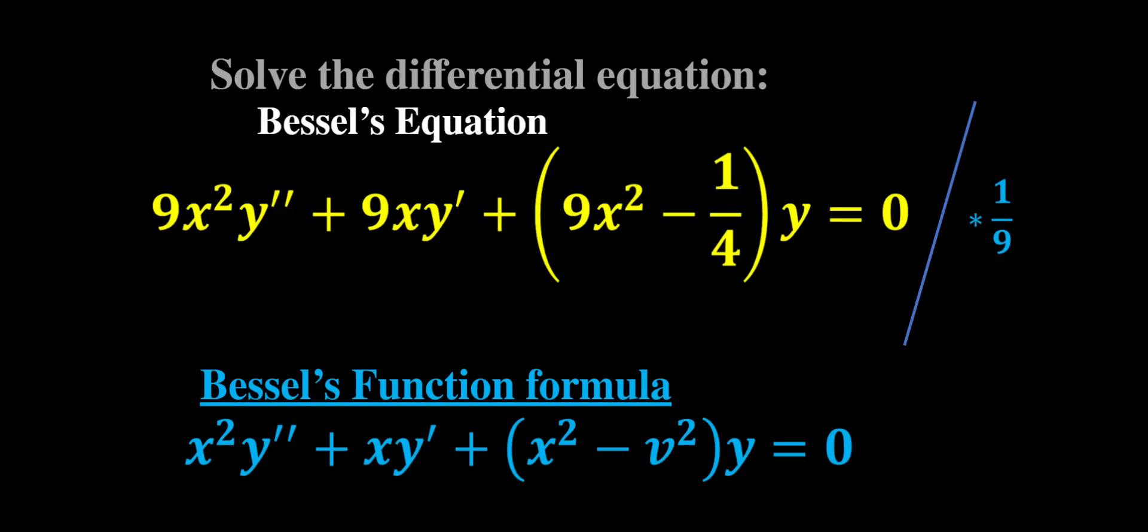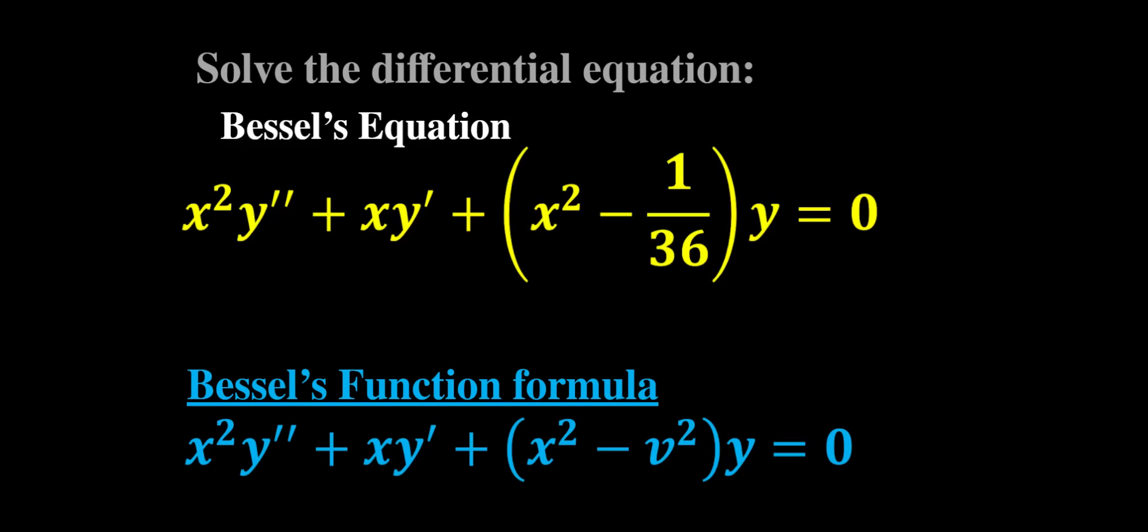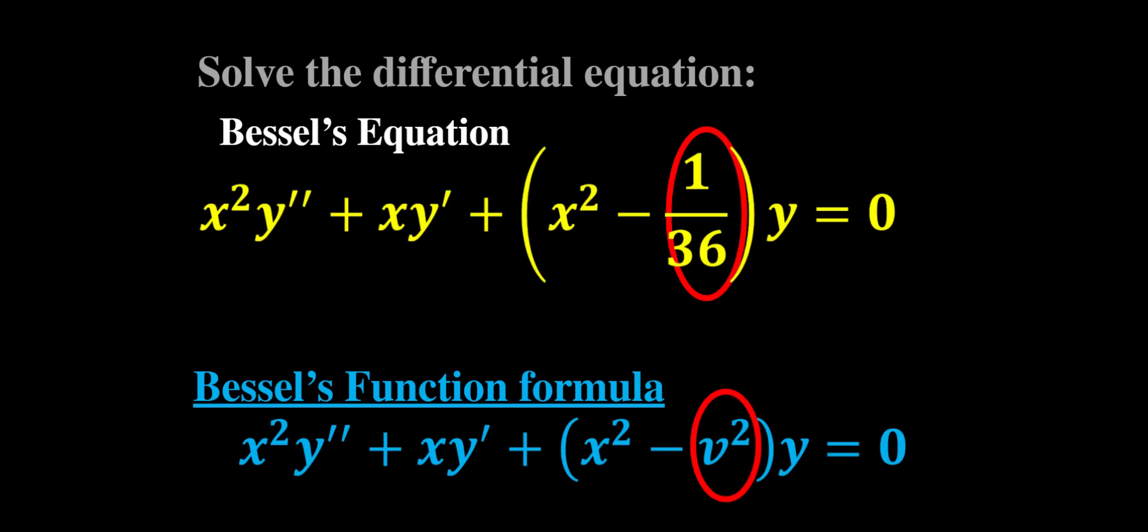For that we're going to divide the equation by 9, and that's going to allow us to get to this form. Now we are in a position where we can directly compare it to the formula and we can see that it matches very well. Here we can see that our v² is the same thing as 1/36.